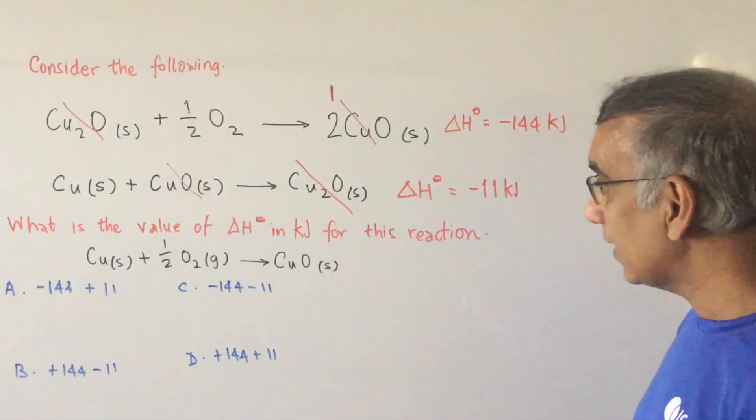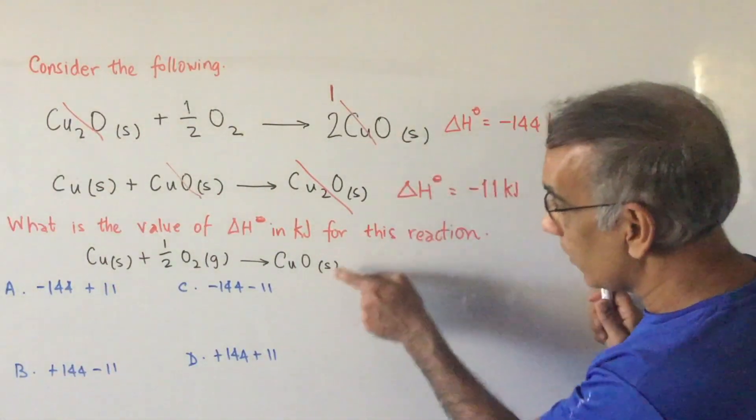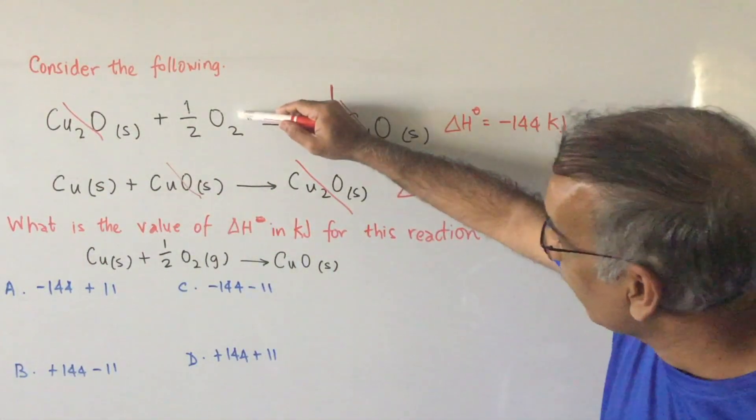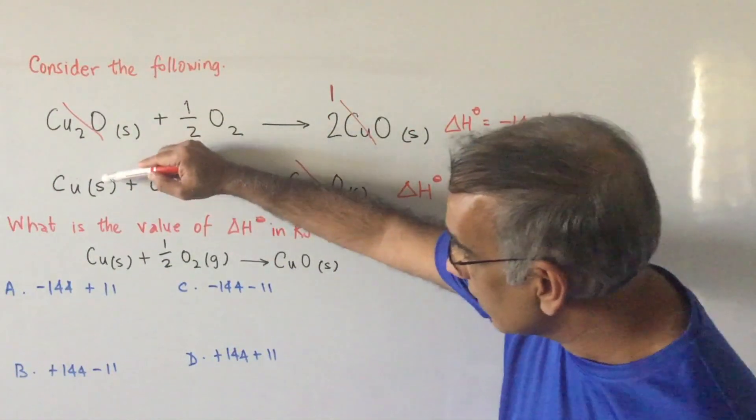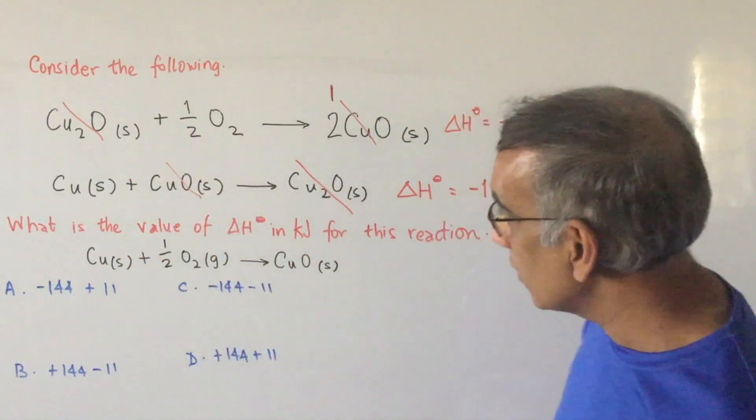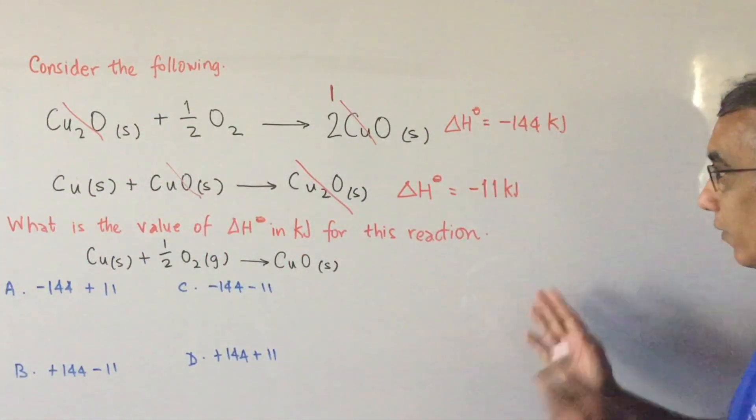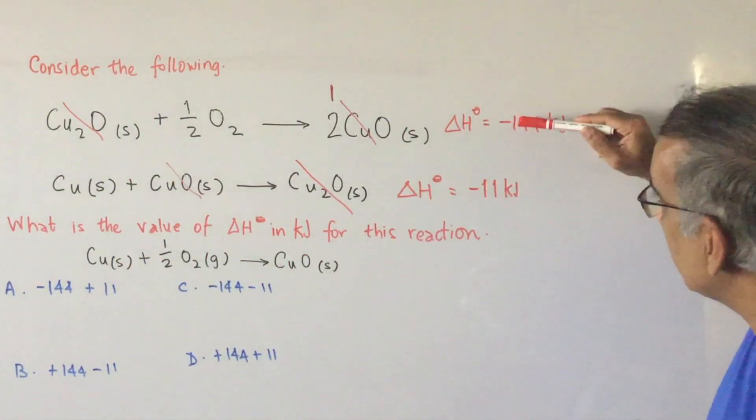And we need to take a note of that. So that one becomes this. That half O2 becomes equivalent to that. This Cu solid goes in here. So now that we've got everything arranged nicely,